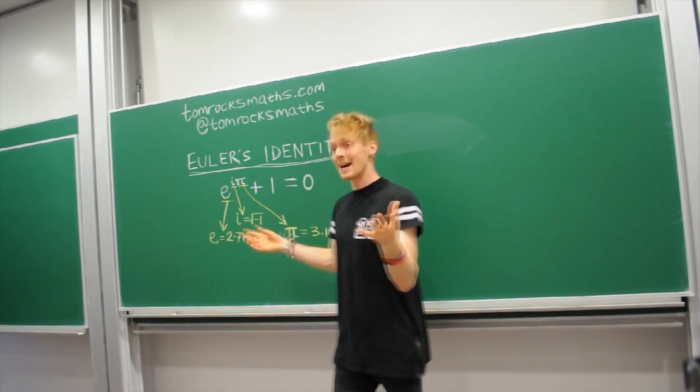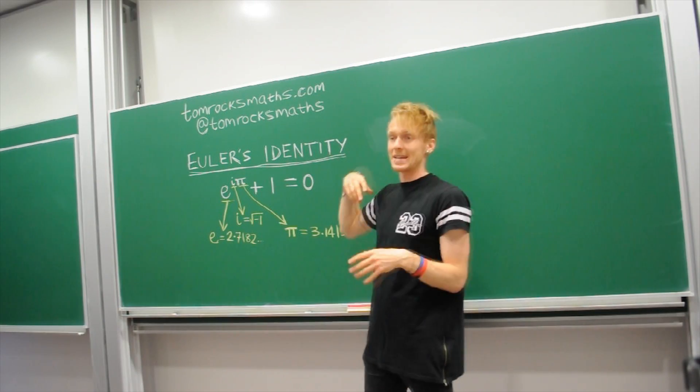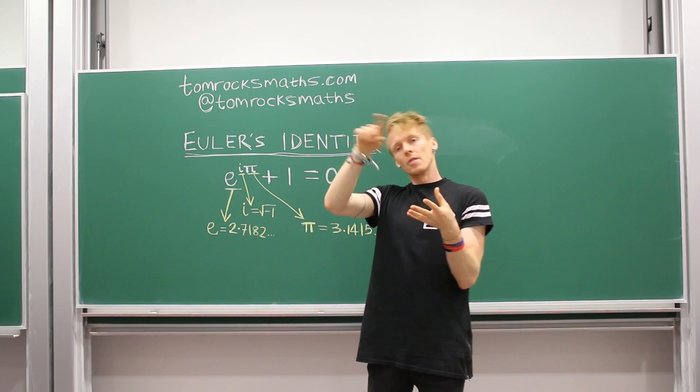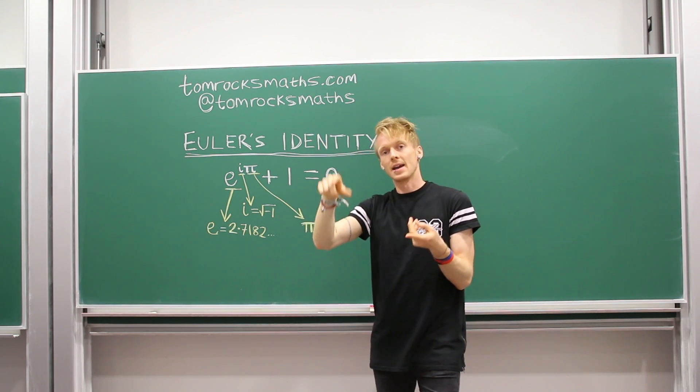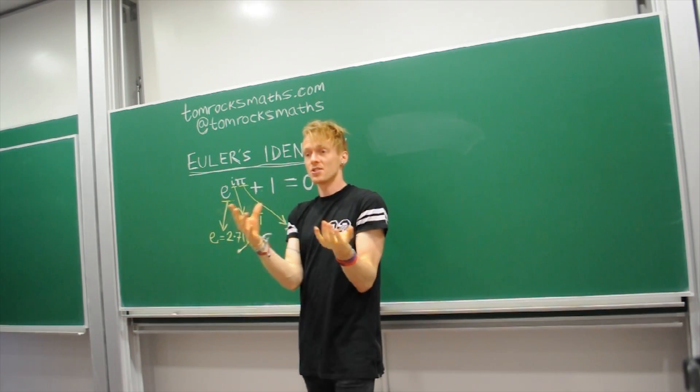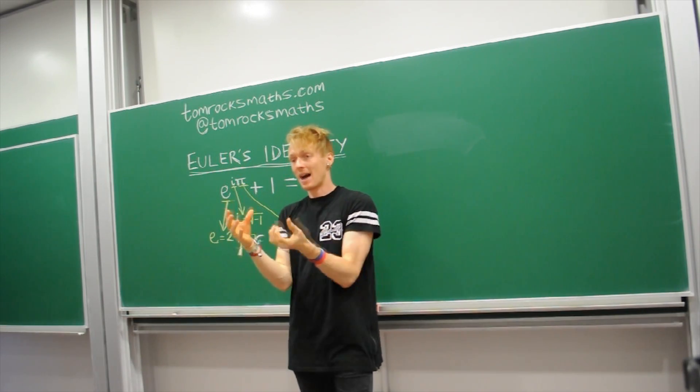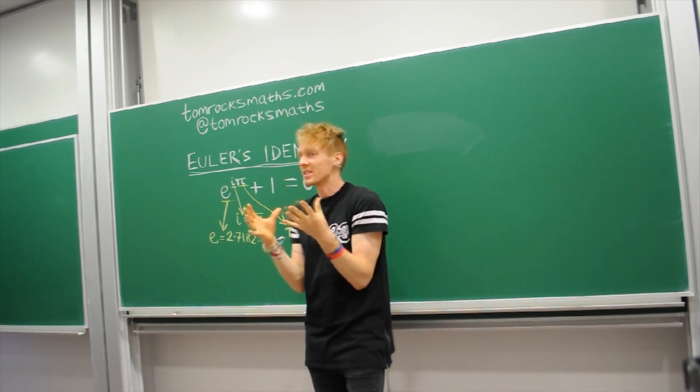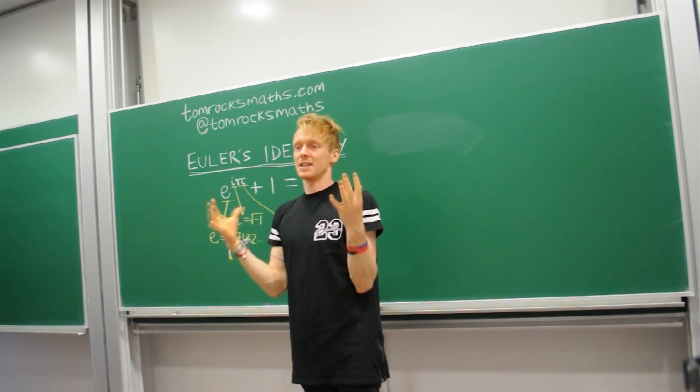Our next number is pi. So pi is 3.1415, again goes on forever, and you can define pi as the circumference of a circle, the distance all the way around the edge, divided by the diameter, so the distance across the circle where you pass through the middle point. Anything to do with circles, which by extension anything to do with spheres, pi appears, and because lots of things in our universe are spherical, then pi comes up everywhere in maths and physics.